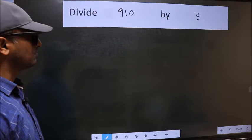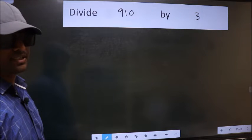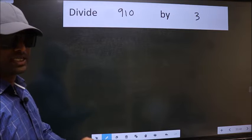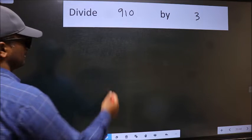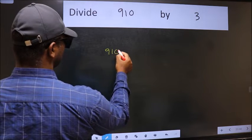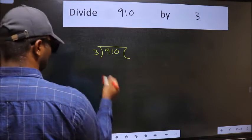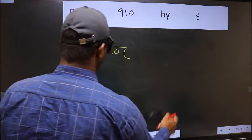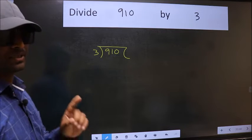Divide 910 by 3. To do this division, we should frame it in this way: 910 and 3 here. This is your step 1.